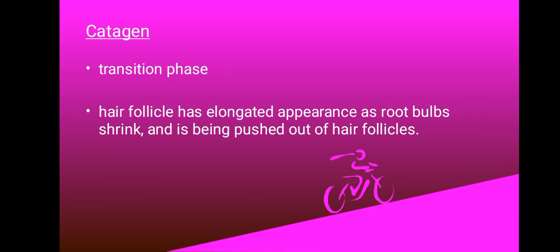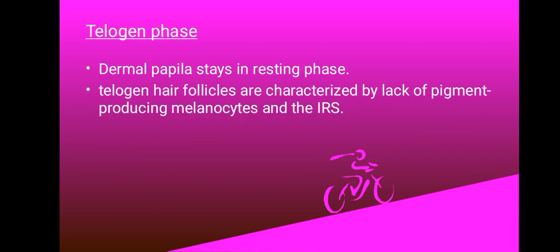That's what happens in the catagen phase, which is the transition phase. Now we have the telogen phase. In this phase, the dermal papilla stays in a resting state. Telogen hair follicles are characterized by a lack of pigment-producing melanocytes in the IRS. This is the resting phase, which is followed by the final stage — exogen — where the hair exits, and we have shedding of hair. That is the hair growth cycle in the simplest way.